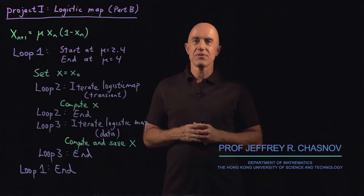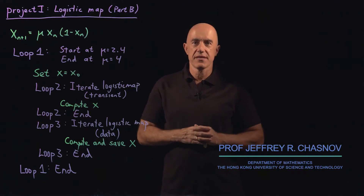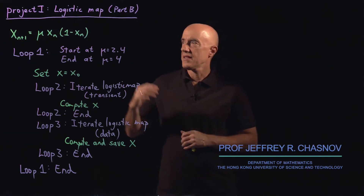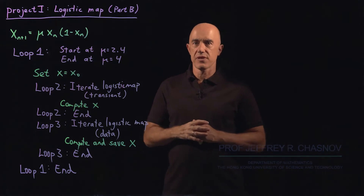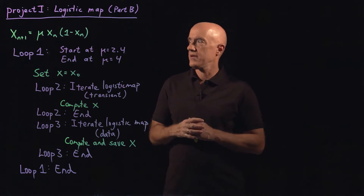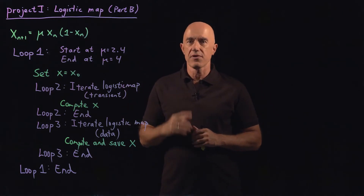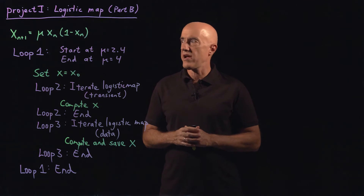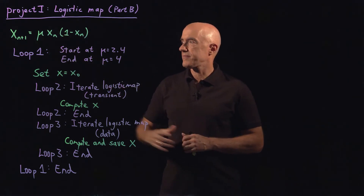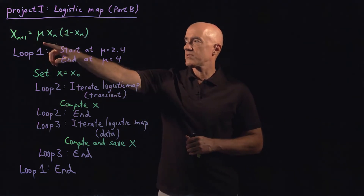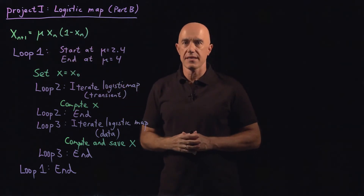Now is the time to do your first project in this course. Let me give you some help in structuring the code. You want to compute the bifurcation diagram for the logistic map: x_{n+1} = mu * x_n * (1 - x_n).